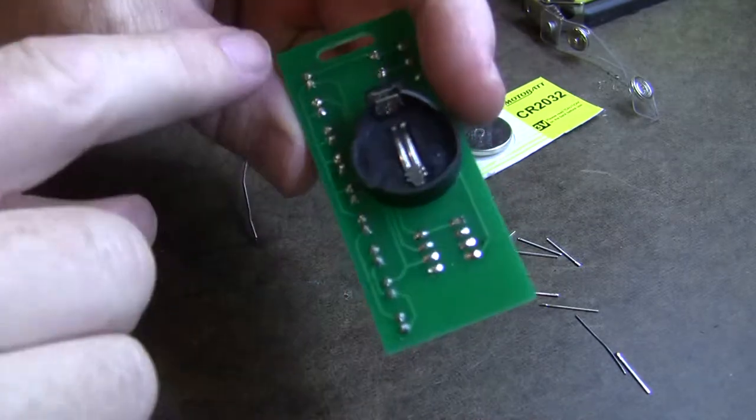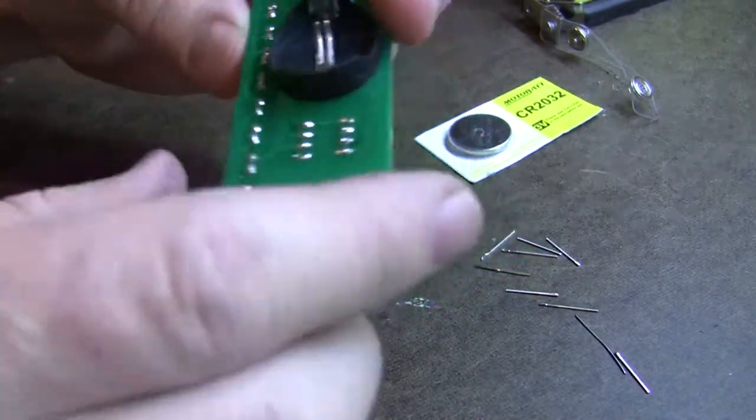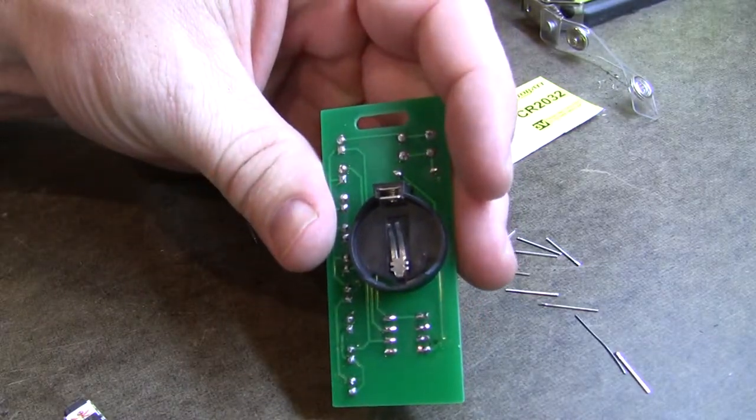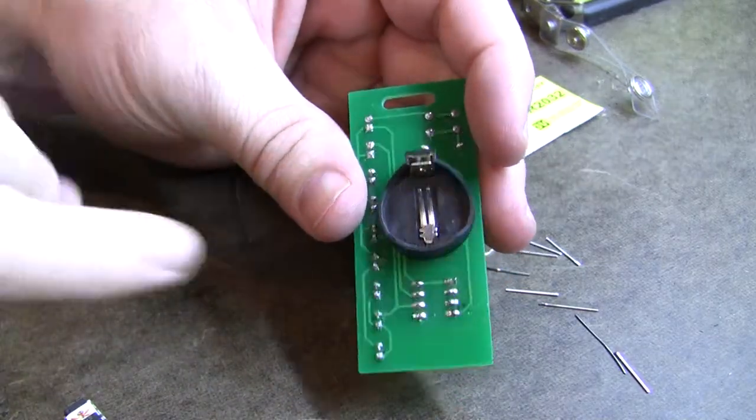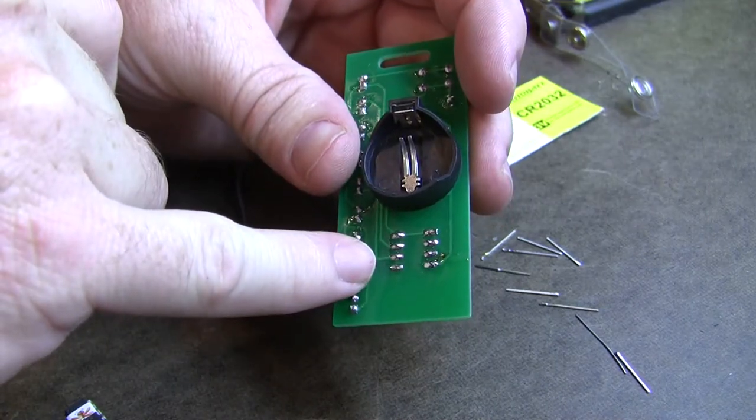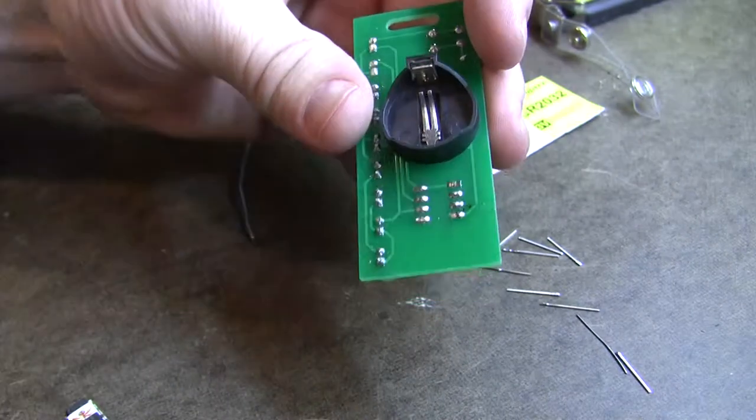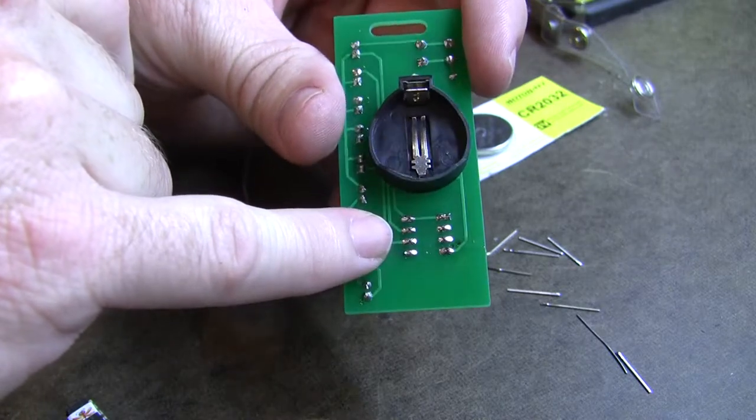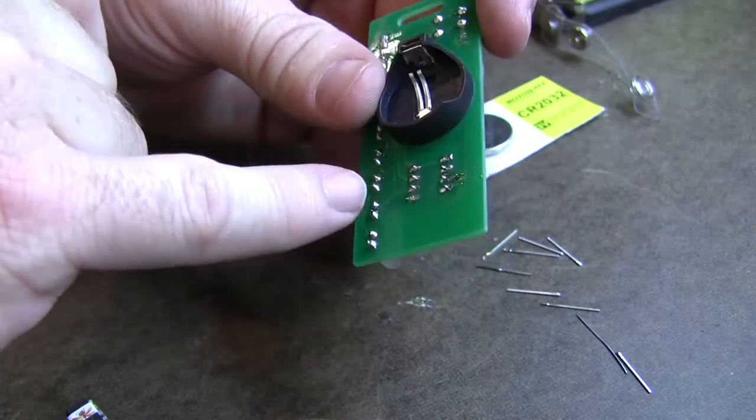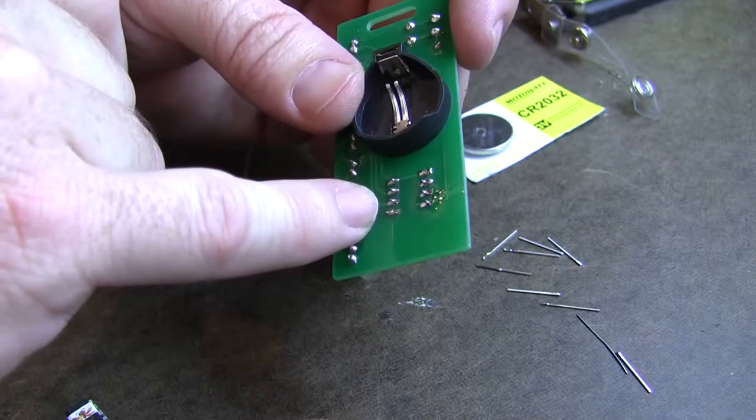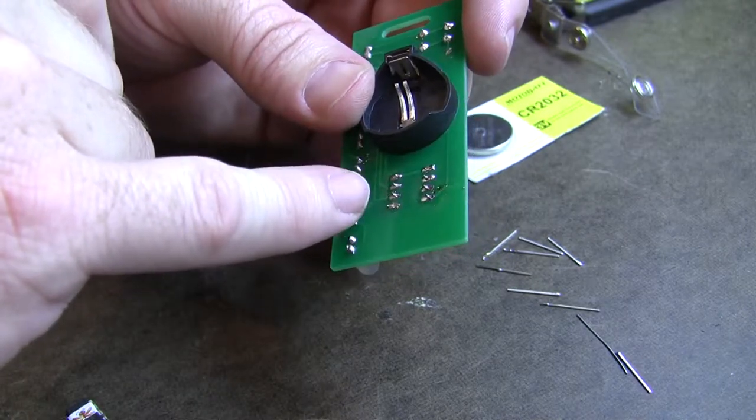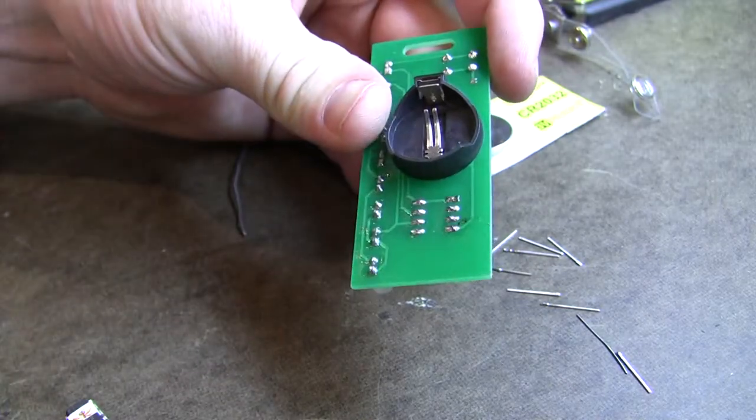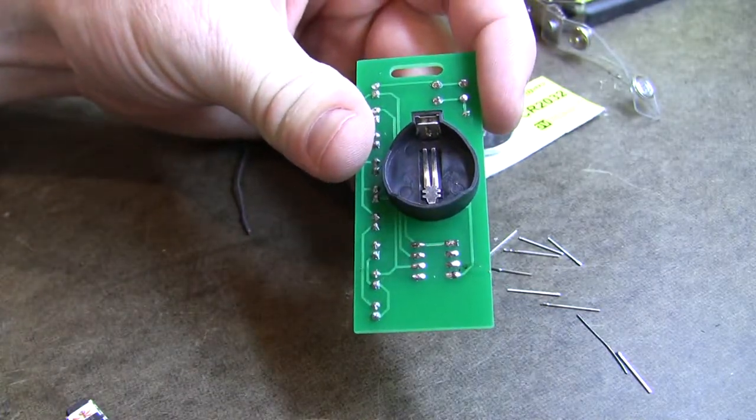Anyway, once you're sure that you don't have any solder bridges, all the wires are actually soldered. One thing that I see people do a lot is they're too sparing with the solder. You know, solder's not gold. It's not a precious metal. Get some solder on these things. You need to have the proper amount of solder to make a good connection. If it just looks like you just sort of waved a little solder in its direction, you need more solder on there.